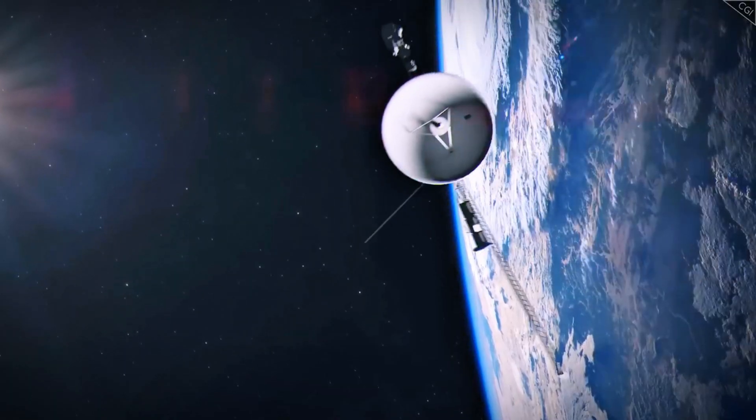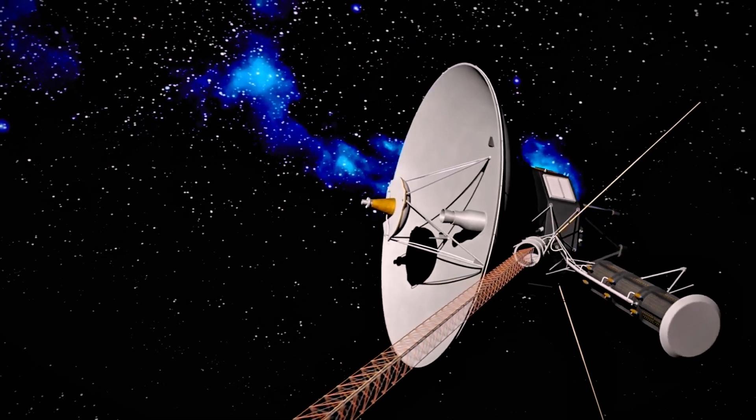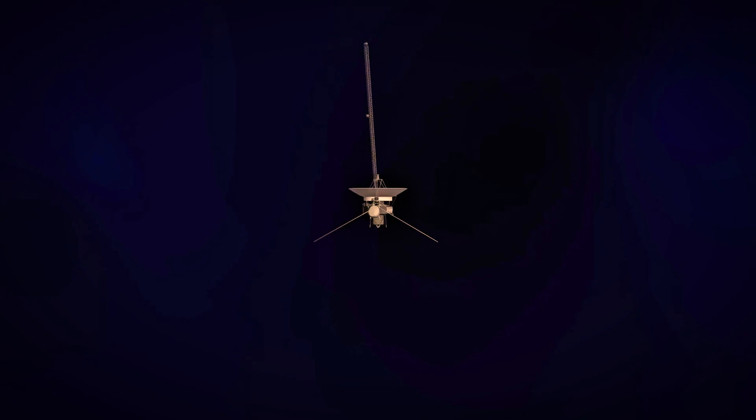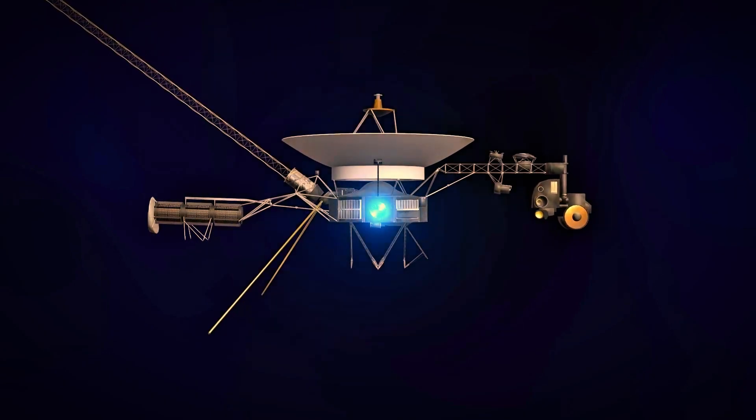Originally, the plan was to send two pairs of thermoelectric outer planet spacecraft, but budget constraints led to a scaled-down version using Mariner-class spacecraft.